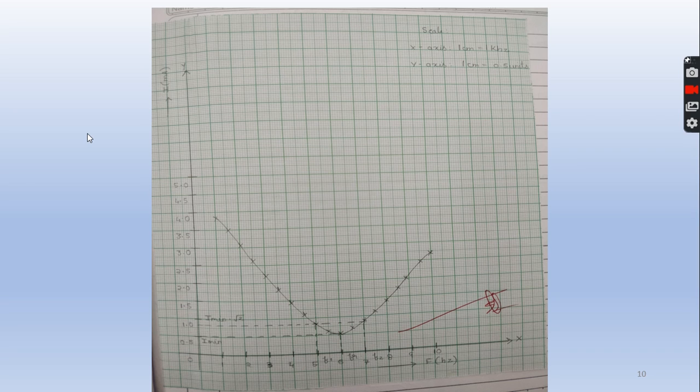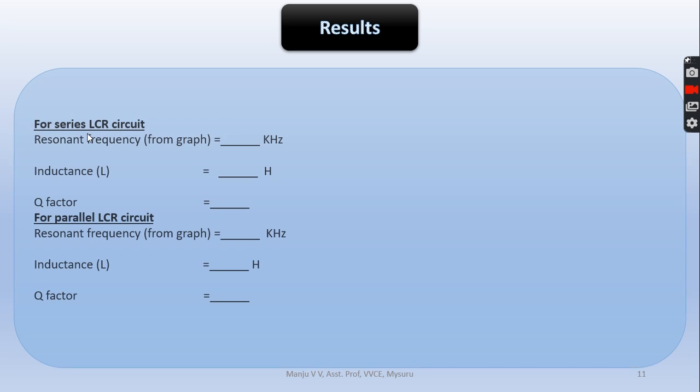This is one of the model graphs which we have plotted. And once you calculate the inductor value, resonant frequency, and the bandwidth quality factor, express everything in form of SI units. Resonant frequency keep it in kilohertz, inductor value in henry, quality factor - it is the ratio of the frequency so there is no SI unit. Quality factor for parallel, do the same thing.